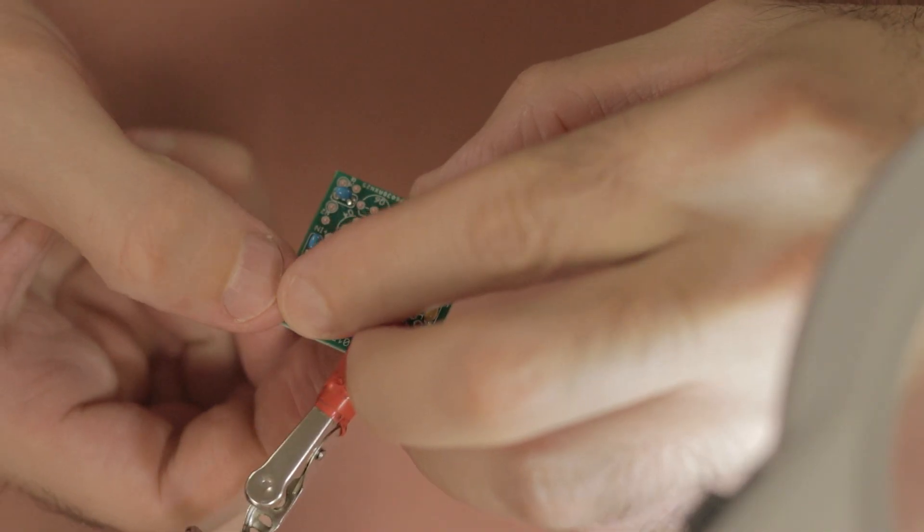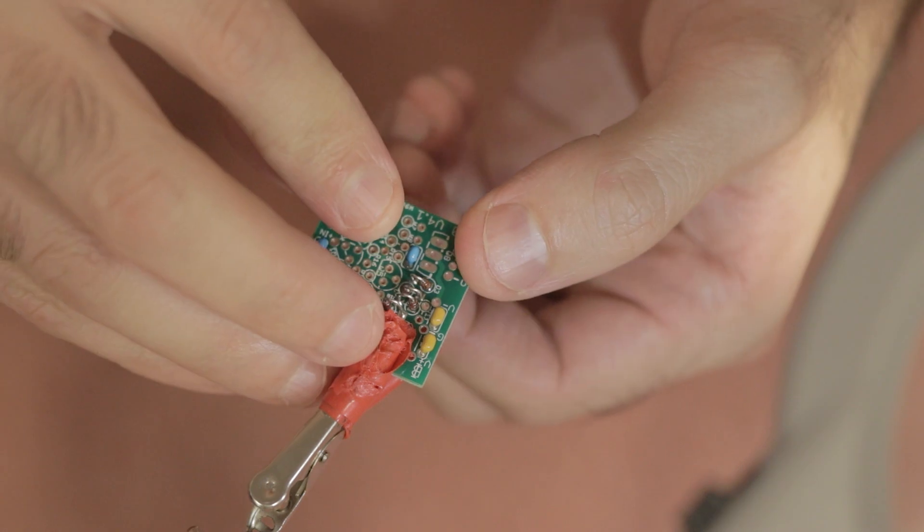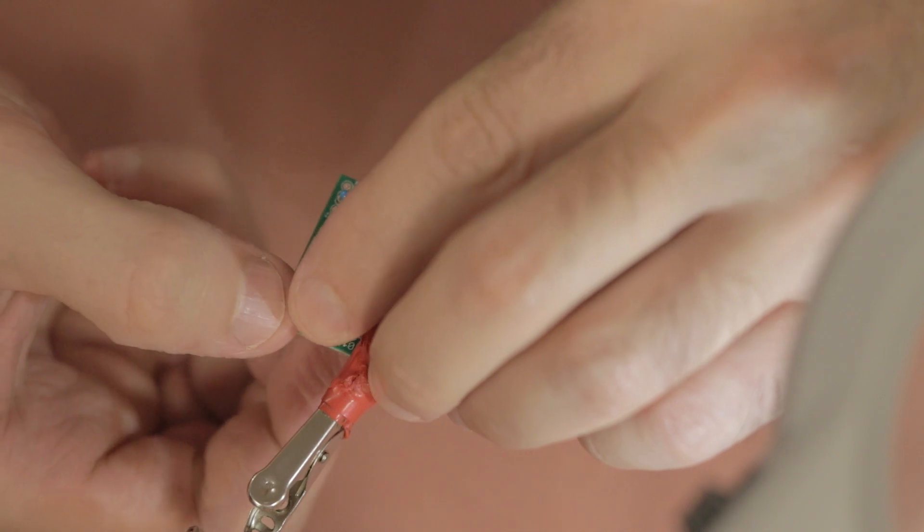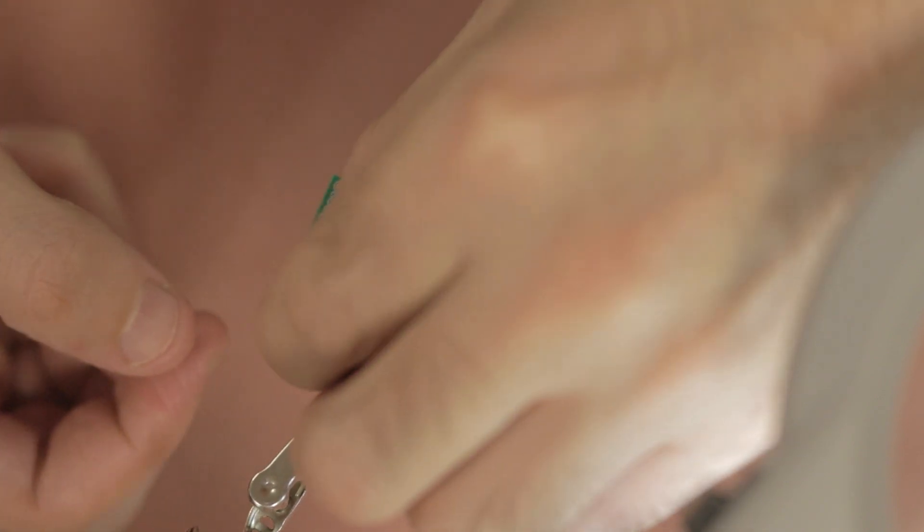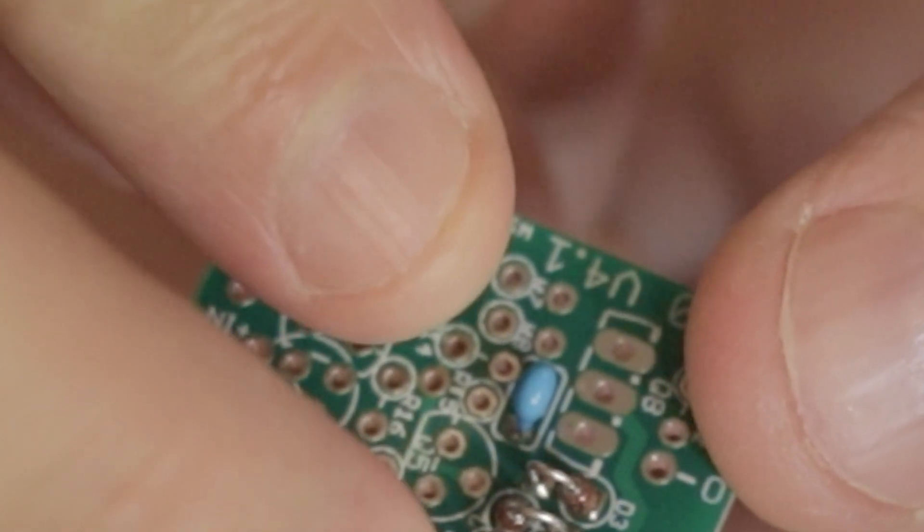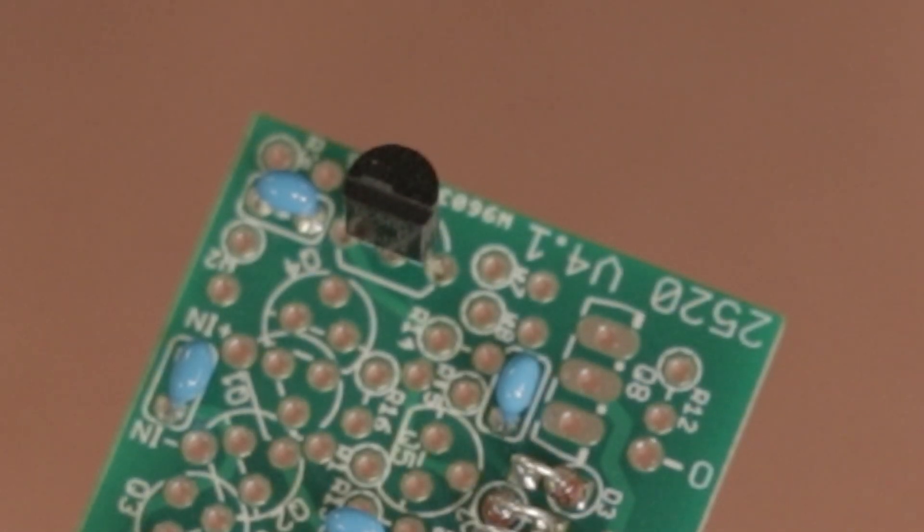Then next up are a pair of transistors. There's two of them, BC560C—check that you've got the right ones using your magnifying glass. You need to install them at Q6 and Q9. And as always with transistors, you've got to make sure that you install them correctly, so that the semicircle part on the transistor matches the semicircle that you see on the PCB.